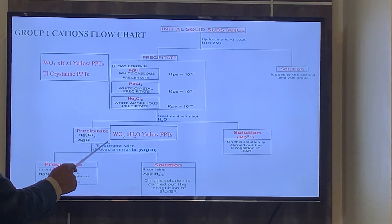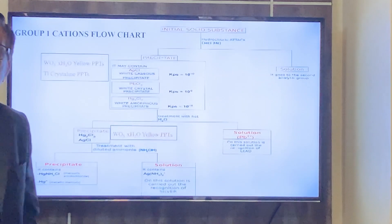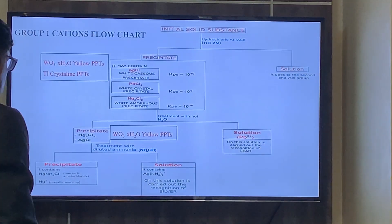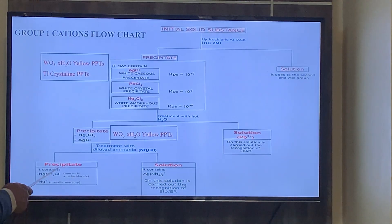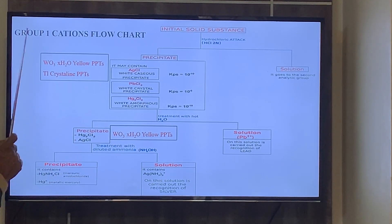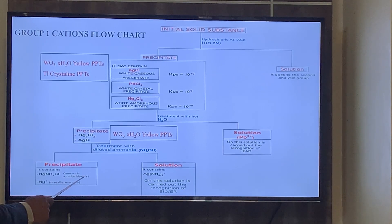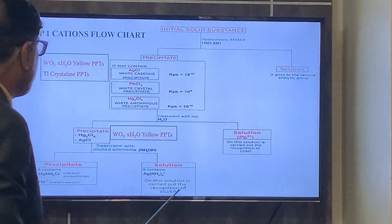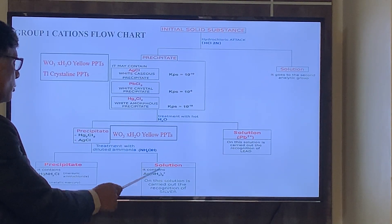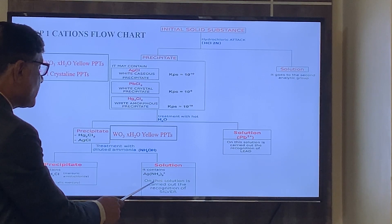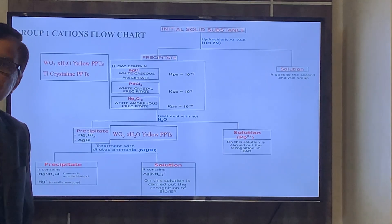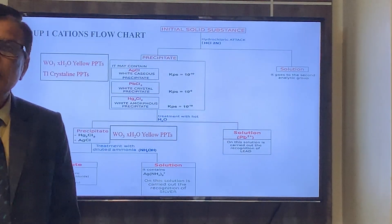Treat these precipitates with dilute ammonium hydroxide (NH₄OH). If you get precipitates with ammonia, then the precipitates may be HgNH₂Cl, and metallic mercury may also be present. In the solution, it contains [Hg(NH₃)₂]²⁺. The solution is then carried out for the recognition of silver — you can perform a test for silver.